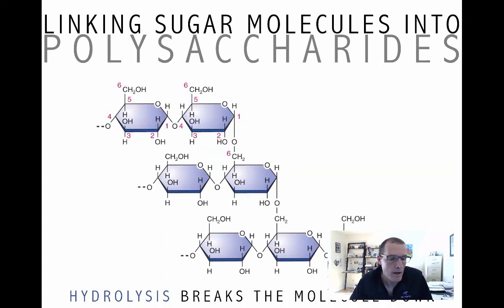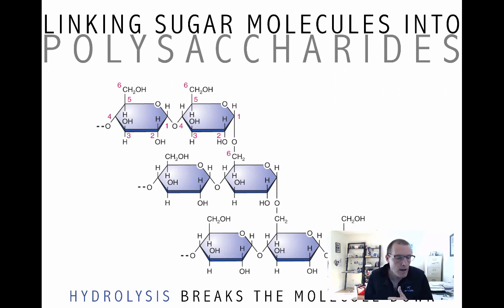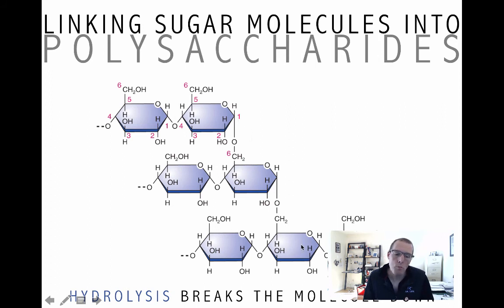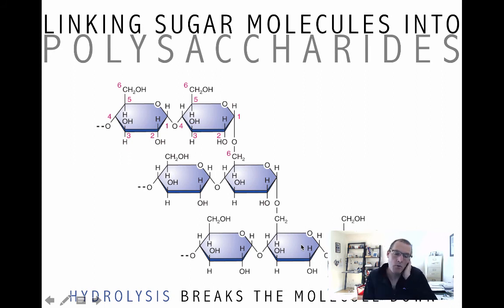The last thing we'll look at is glycogen. You can see it's a little bit more branched than the starch we looked at. Same kind of principle — we've got glycosidic bonds joining the monomers, which are glucose, together. There's a 1-4 there and a 1-6 here. More branching. Hydrolysis breaks this molecule down. Condensation builds it up. The monomers are glucose. And there's a structure-function relationship.